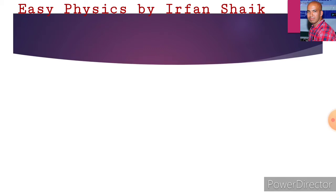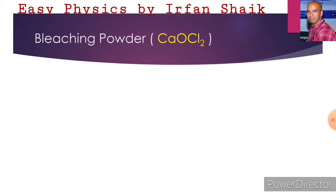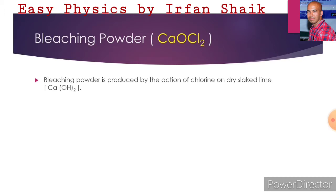First of all, let us discuss about bleaching powder. Its formula is CaOCl2. Bleaching powder is produced by the action of chlorine on dry slaked lime. The formula of slaked lime is Ca(OH)2.